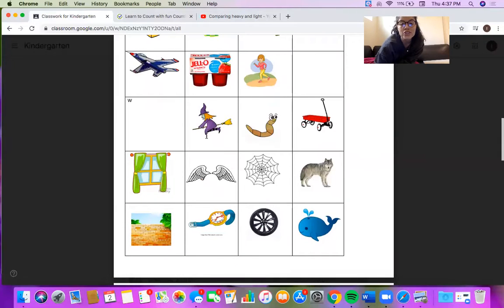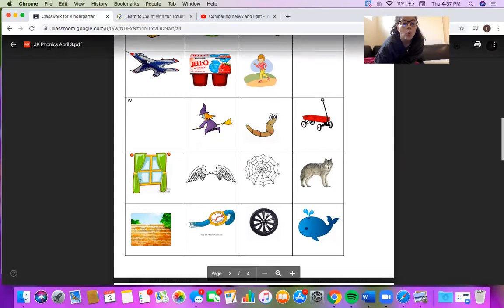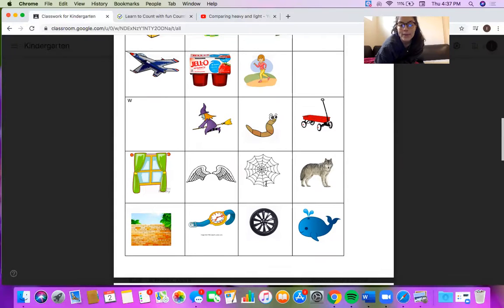Over here we have a witch, worm, wagon, window, wings, web, wolf, wall, watch, wheel, and whale.